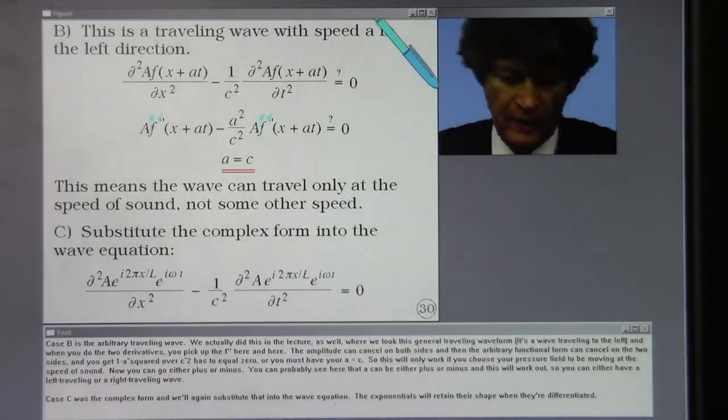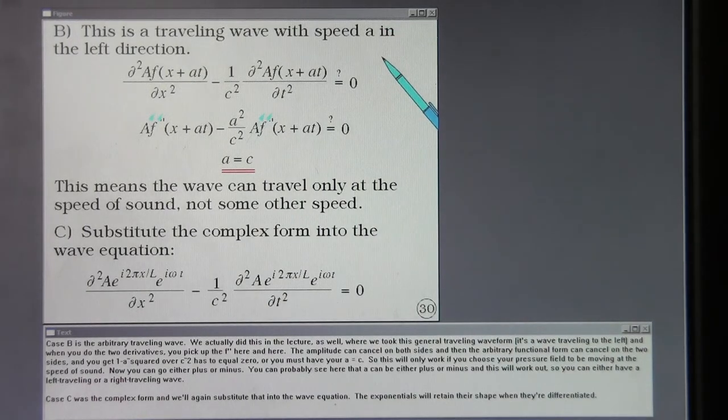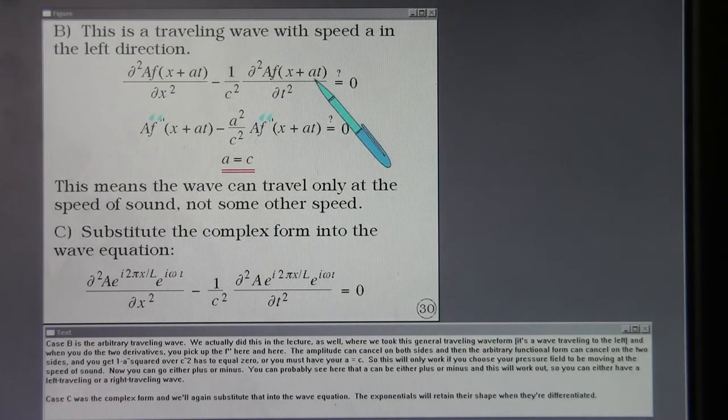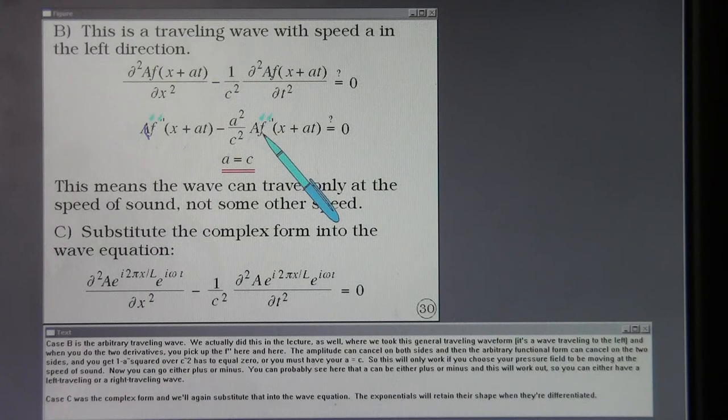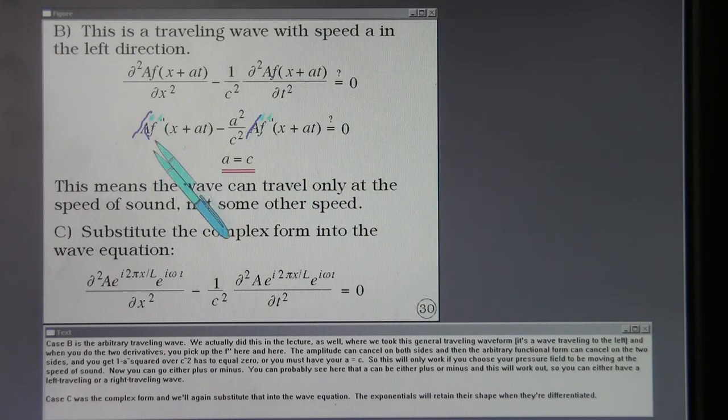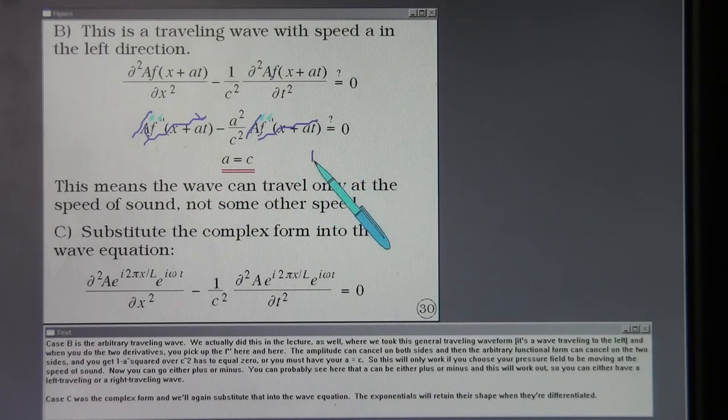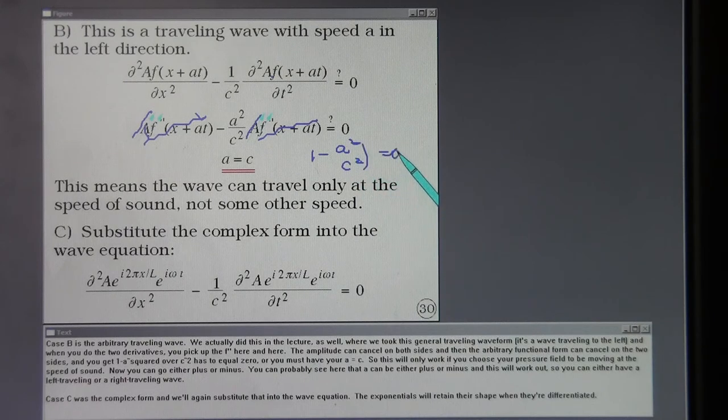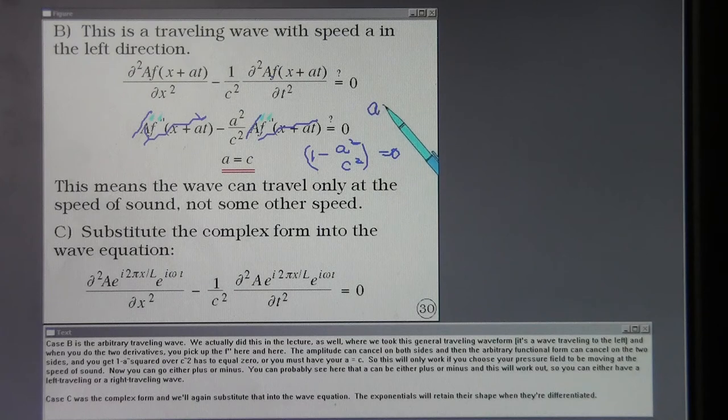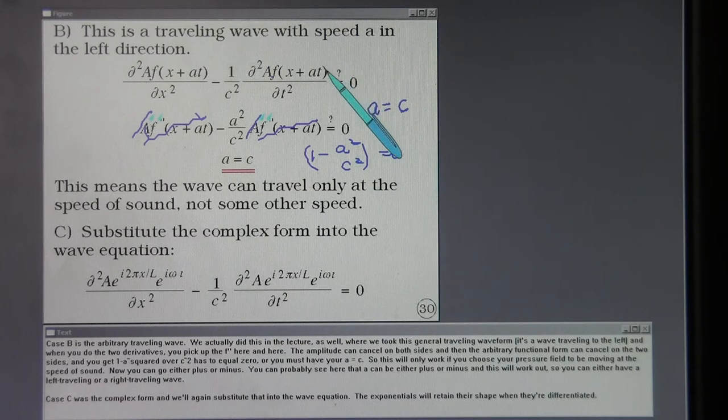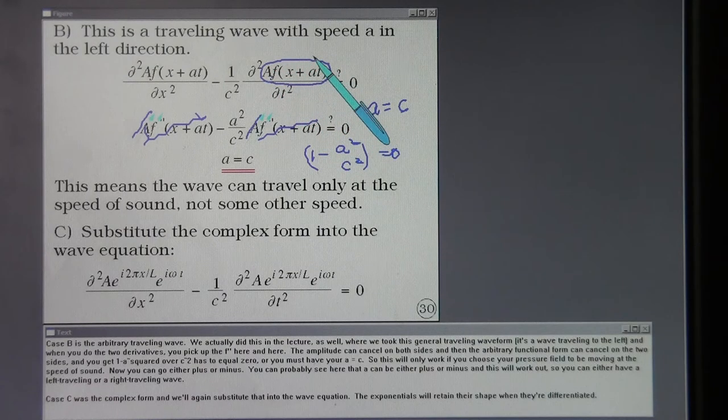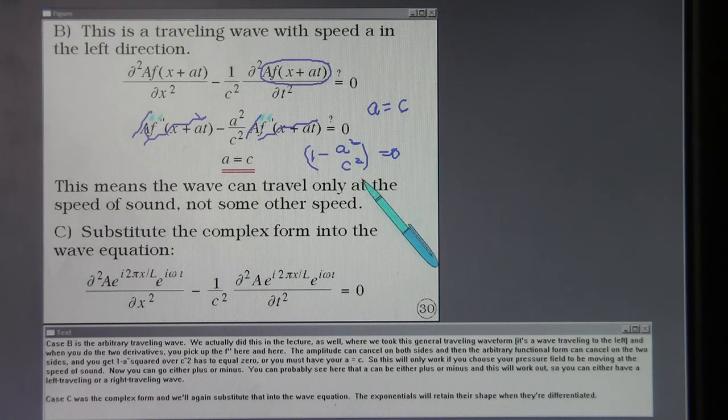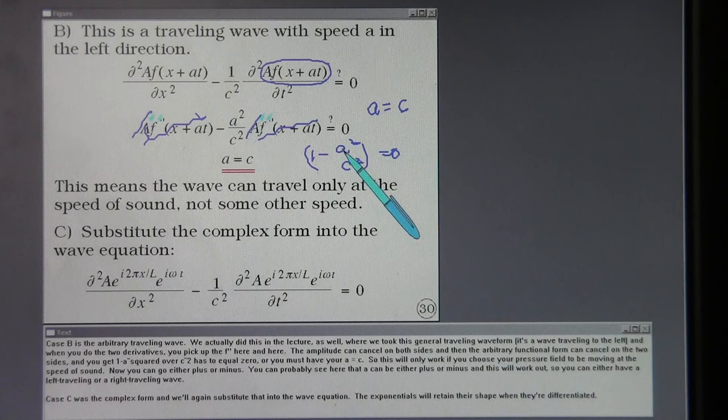Case B is the arbitrary traveling wave. We actually did this in the lecture as well, where we took this general traveling wave form. It's a wave traveling to the left and when you do the two derivatives, you pick up the f double primes here and here. The amplitude can cancel on both sides and then the arbitrary functional form can cancel on the two sides and you get 1 minus a squared over c squared has to equal zero or you must have your a equal c. So this will only work if you choose your pressure field to be moving at the speed of sound.